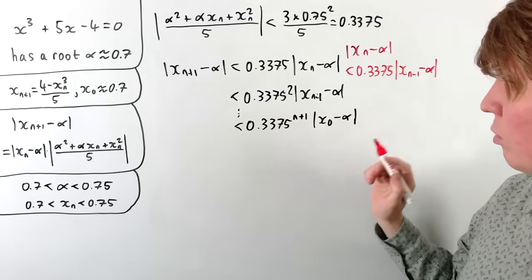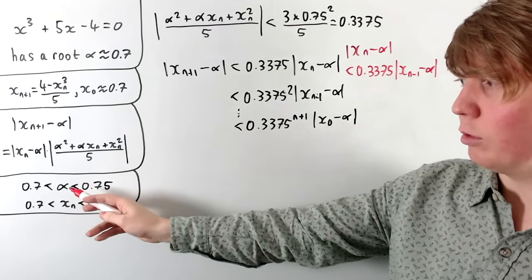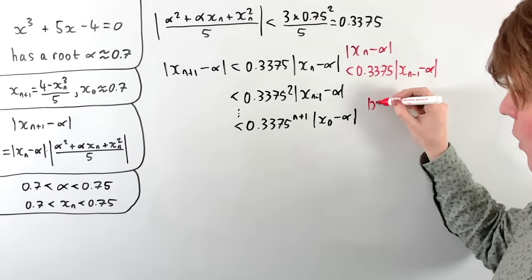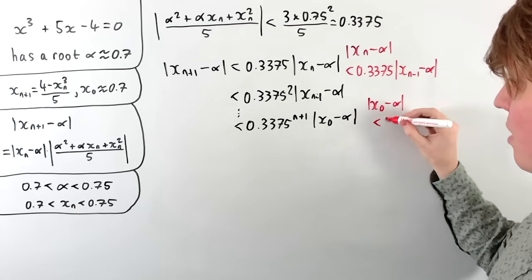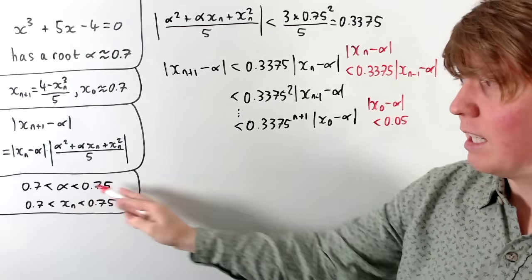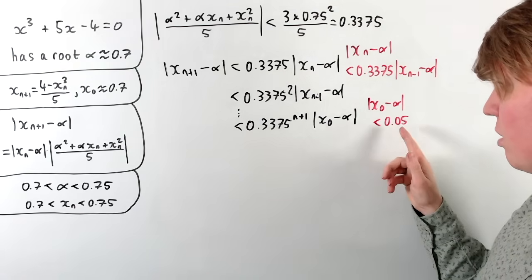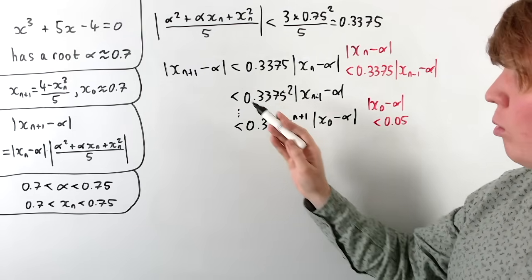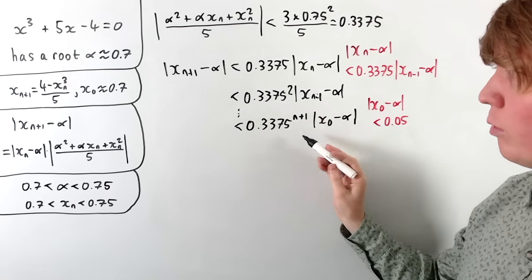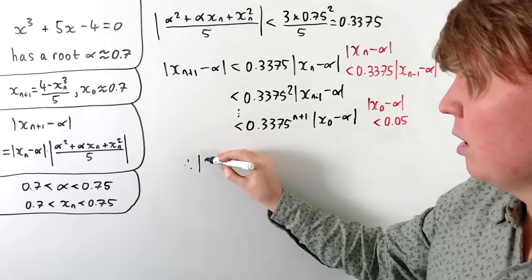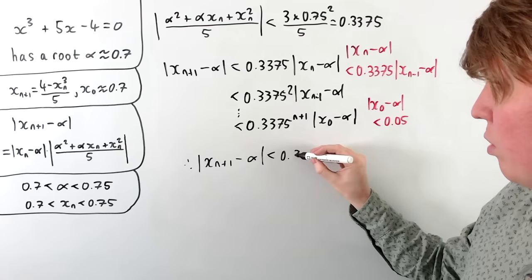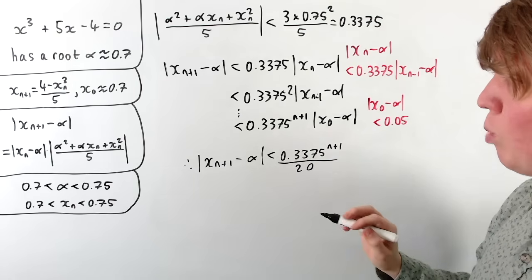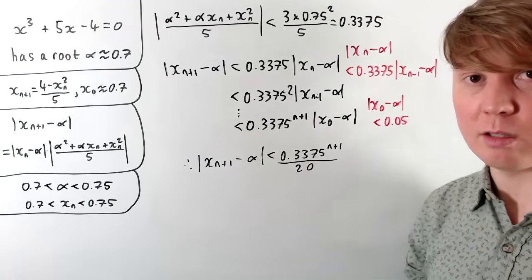The distance of the initial value from the root: since both alpha and x_0 are in this interval of width 0.05 (between 0.7 and 0.75), the absolute value of x_0 minus alpha must be less than 0.05, which is 1/20. So the distance of the n+1th term to our root is less than 0.3375^{n+1} divided by 20. This gives us a really nice sense of how quickly this will converge — though of course this is just an upper bound.